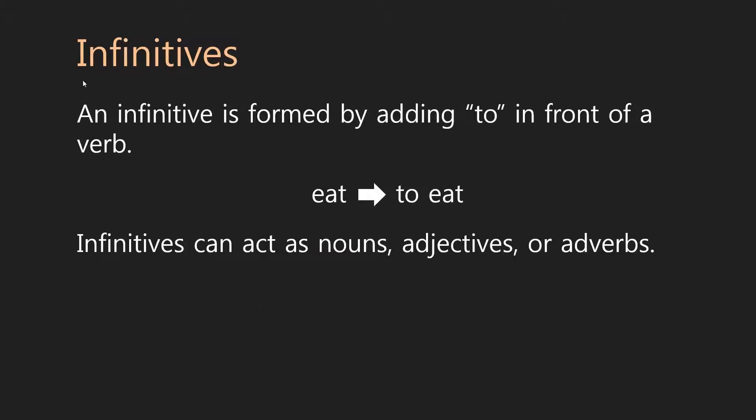The second type of verbal is the infinitive. Okay. An infinitive is formed by adding to in front of a verb. So, when you say to eat rather than eat, you've just transformed a verb into an infinitive. Okay. And infinitives are rather flexible. Infinitives can act as nouns, adjectives, or adverbs.